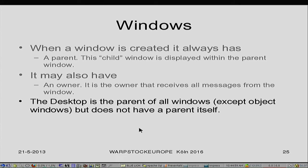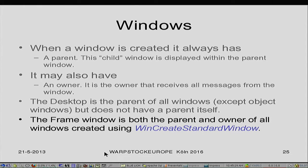The first window is basically a desktop — that's the parent of all windows, with the exception of object windows. The desktop doesn't have a parent itself — it is the root. When we create a window, we often use what we call create standard window, and the frame — the outside of the window — is both the parent and the owner of the window.